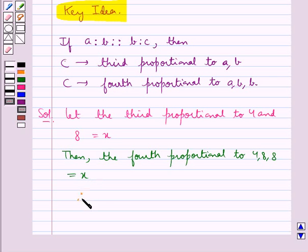That is, we have 4 is to 8 is proportional to 8 is to X. This means that the product of extremes, 4 multiplied by X, is equal to the product of the means, 8 multiplied by 8.